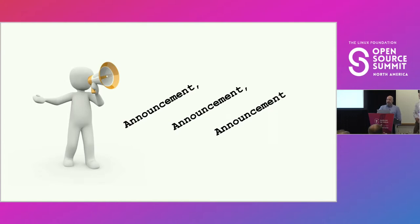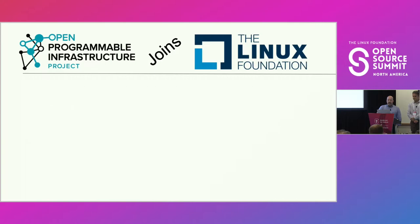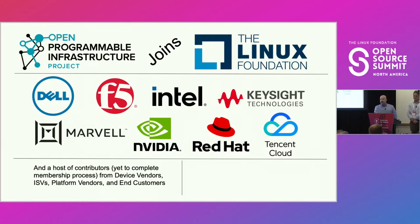We have a couple of announcements today. We're really excited — this has been a long, hard trudge to get here. Many of us started this not being open source experts. Today, we're excited to announce that OPI has joined the Linux Foundation. We are the newest Linux Foundation project. And here are the eight founding members: Dell, F5, Intel, Keysight Technologies, Marvell, Nvidia, Red Hat, and Tencent Cloud. These eight companies have put their money where their mouth is, joining us to fund this project and make it available.